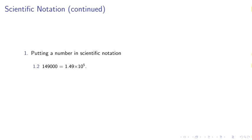A number like 149,000 can be expressed as 1.49 times 10 to the 5th.